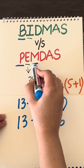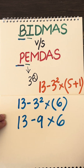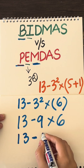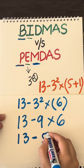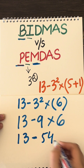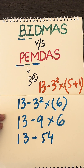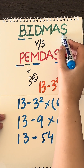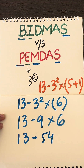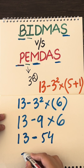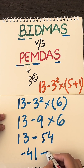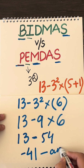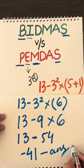Now we head to the multiplication. Because we have no division to do here, solving this gives us 54. Now we're heading towards subtraction, because no addition is required here. And subtracting 13 from 54 gives us negative 41, which is our final answer.